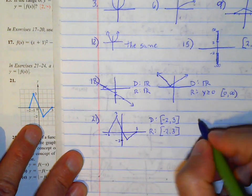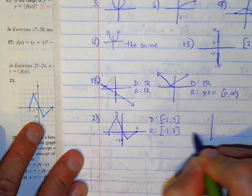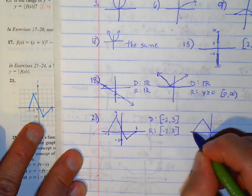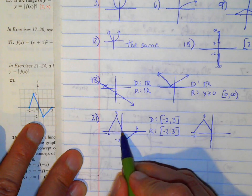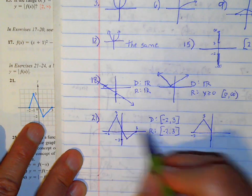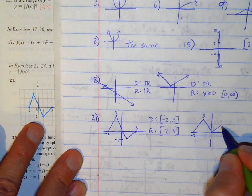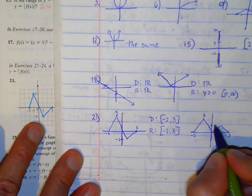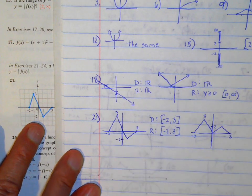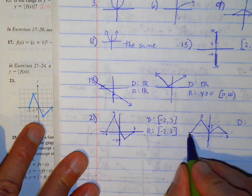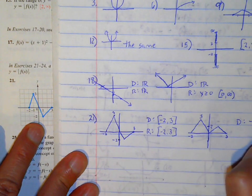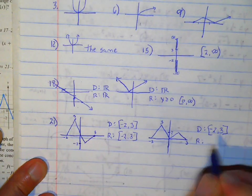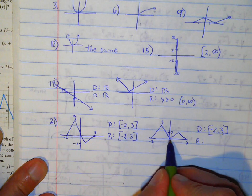Now for the absolute value of f of x — this part stays the same, but the negative part has to reflect up to be positive, at a height of 2 because it was down at negative 2. So the domain would be from negative 2 to 3 again, and the range goes from 0 all the way up to 3.